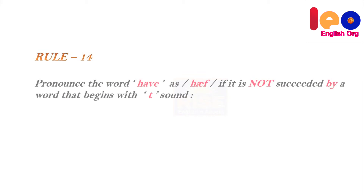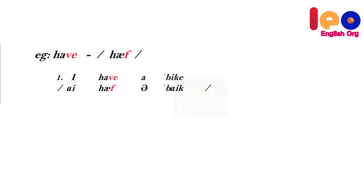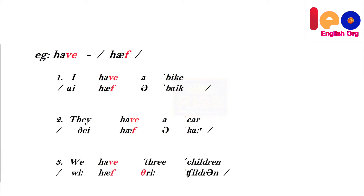Rule 14: Pronounce the word 'have' as 'haf' if it is not followed by a word that begins with a 't' sound. Example: 'I have a bike' — after 'have' there is no word beginning with a 't' sound, so 'have' must be pronounced as 'haf'. Next: 'they have a car', 'we have three children'.